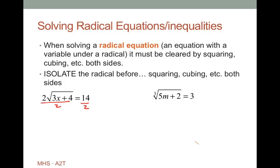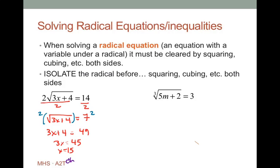To get rid of that 2, I'm going to divide both sides by 2. We'll get the square root of 3x plus 4 equals 7. Now I've got the radical isolated, so I can square both sides. I get 3x plus 4 on the left and 7 squared, which is 49, on the right. Subtract 4 from both sides, divide by 3, and I get x equals 15. Plug x equals 15 back into the original equation to verify — and yes, it does check.